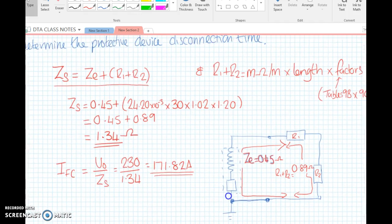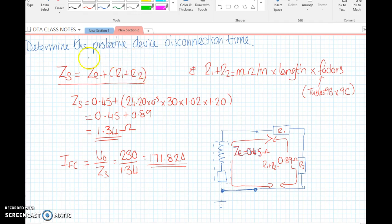There's our impedance: ZS equals ZE plus R1 plus R2. This time we're going to add a bit more accuracy to our R1 R2, because the basic values are for 20 degrees. We're going to put some factors in. To work out R1 R2, it's the milliohms per meter of the cable from table 9a, times the length, which we know is 30 meters, times the factors we need to pick from 9b and 9c.